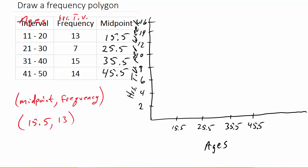So let's plot the points. So 15.5, 13, that would be about right in here. Then we have 25.5, 7. So 25.5, 7 would be about right here. And then 35.5, 15, about right in there. And then 45.5, 14, that would be about right there.